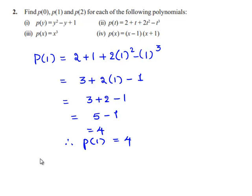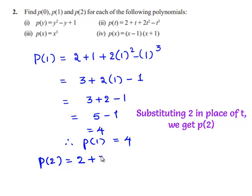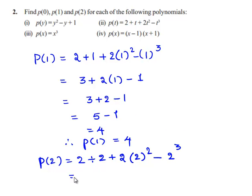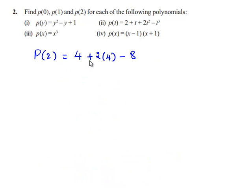And next, p of 2 is equal to 2 plus 2 plus 2 times 2 square minus 2 cube. 2 plus 2 is 4, plus 2 times 4 is 8, minus 2 cube which is 8. So p of 2 is equal to 4 plus 8 minus 8, which is 4 plus 0, which is equal to 4. Therefore, p of 2 is equal to 4.